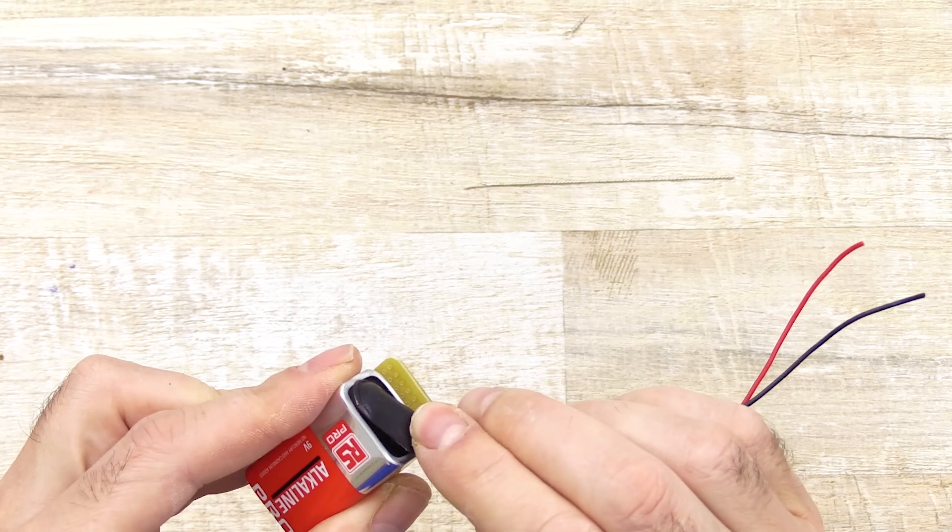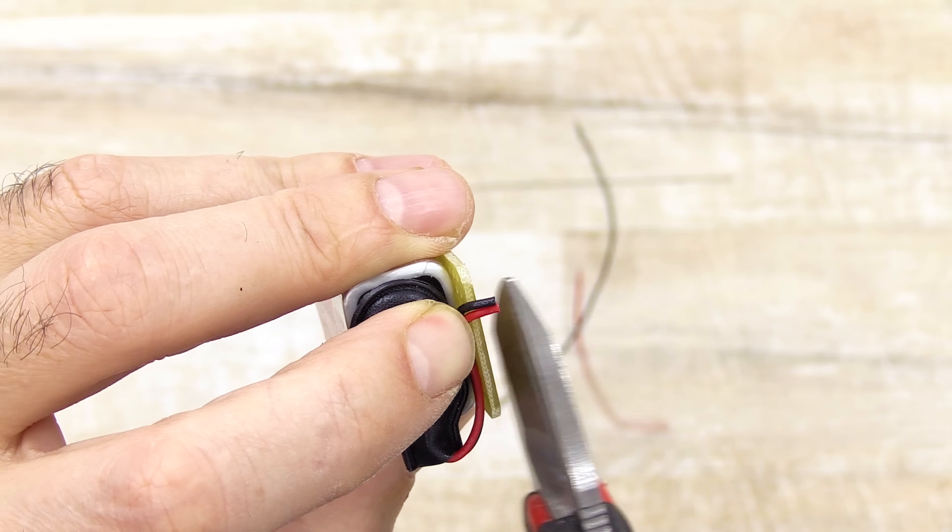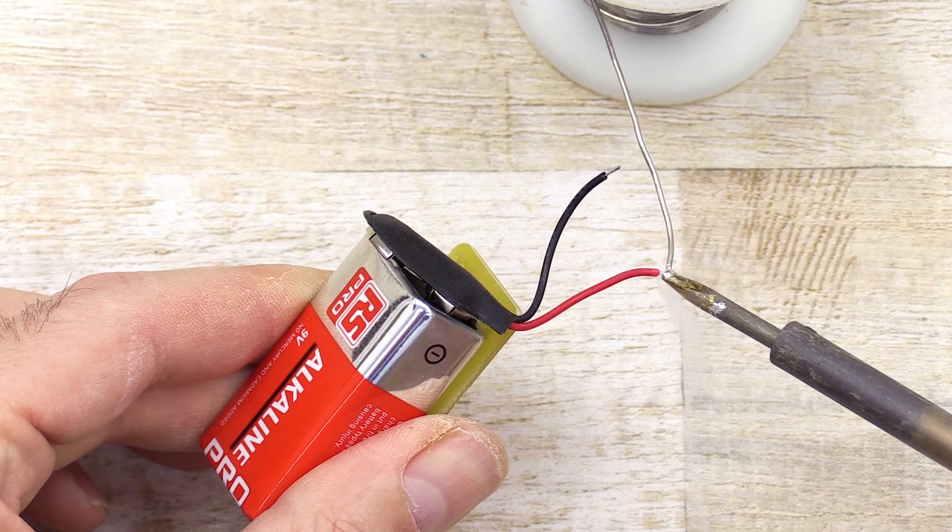Now I'm going to install the battery clip directly onto the PCB. This way, if you don't want to use the tool, you can simply disconnect the clip from the battery.